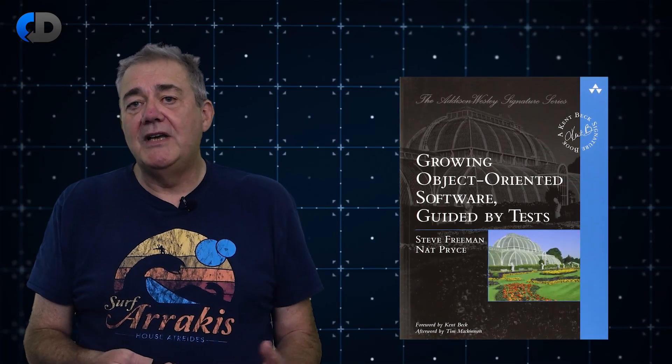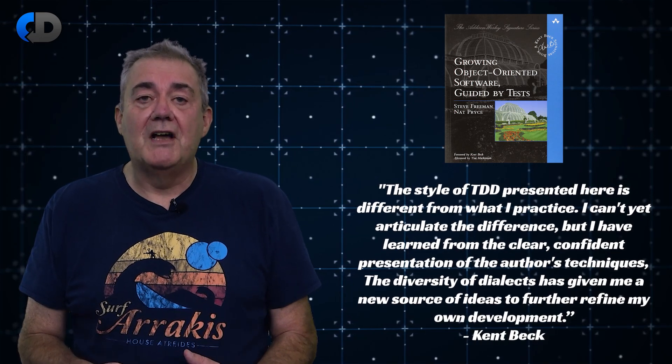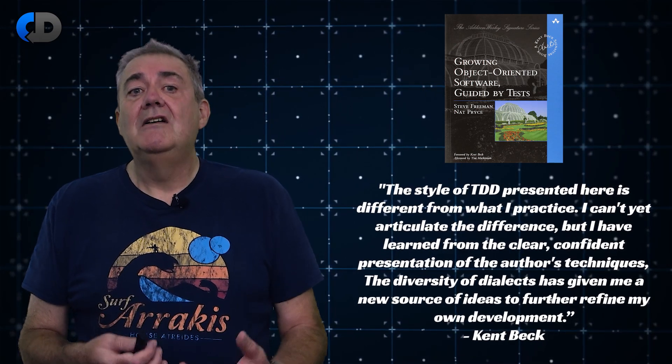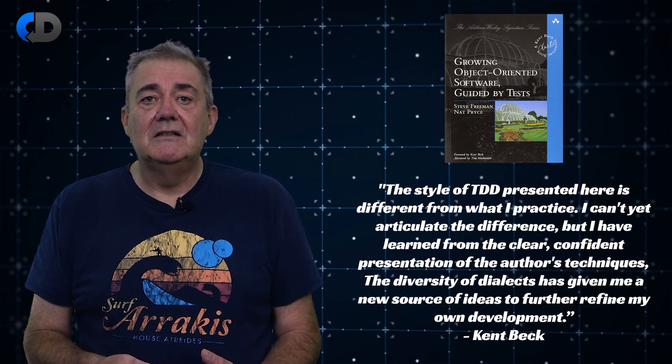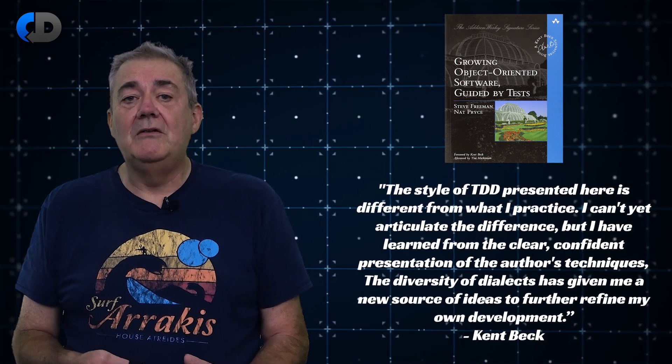Let's start by dispelling the idea of warring factions, and look at what most test-driven development experts would advise. As well as defining the Chicago school of TDD, Kent Beck also wrote the foreword to the book that most clearly defined the London school, Growing Object-Oriented Software Guided by Tests. In his foreword he said: 'The style of test-driven development presented here is different from what I practice. I can't yet articulate the difference, but I have learned from the clear, confident presentation of the author's techniques.'